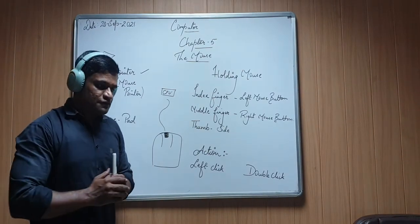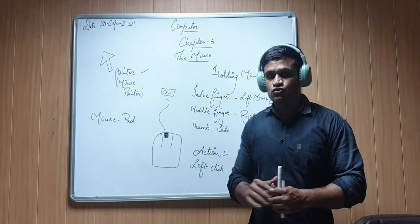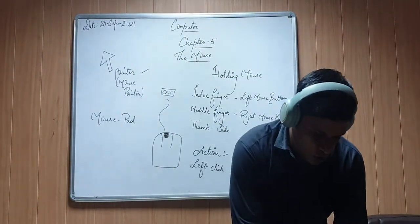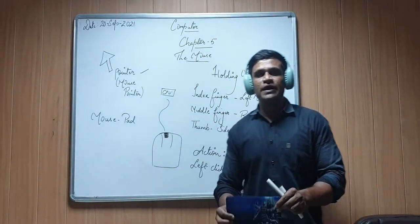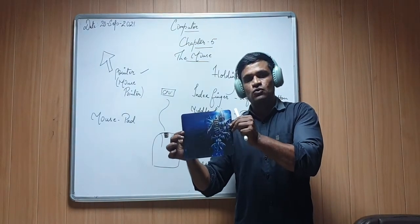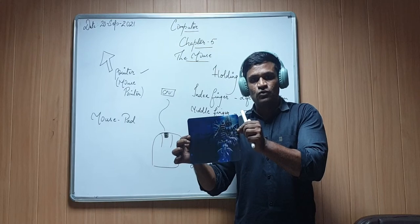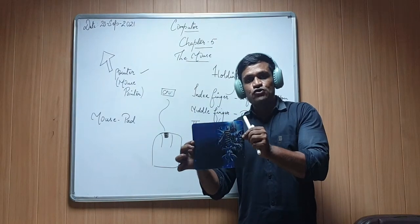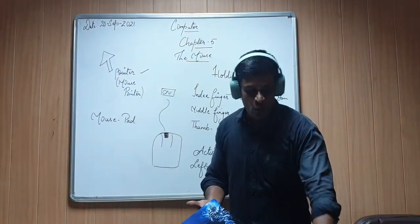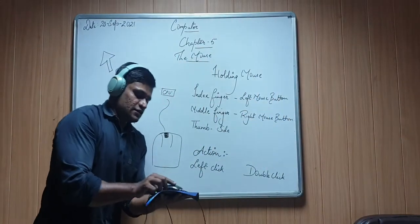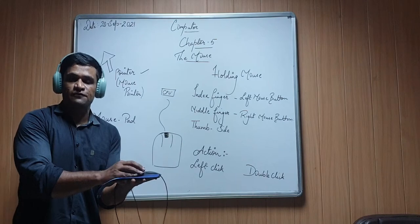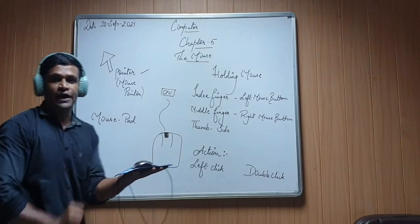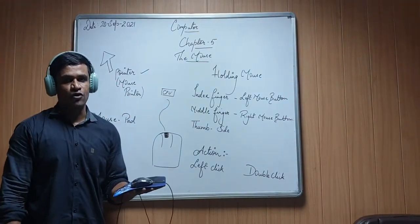Generally we use the mouse on a smooth surface like a table. But the proper way to use a mouse is over a small piece of cloth like this. This piece of cloth, which is generally used to place the mouse, is known as a mouse pad. The mouse pad is used so that your mouse receives a smooth surface, and on this smooth surface the mouse can easily move and the movement will be detected by the pointer, which will also move accordingly.